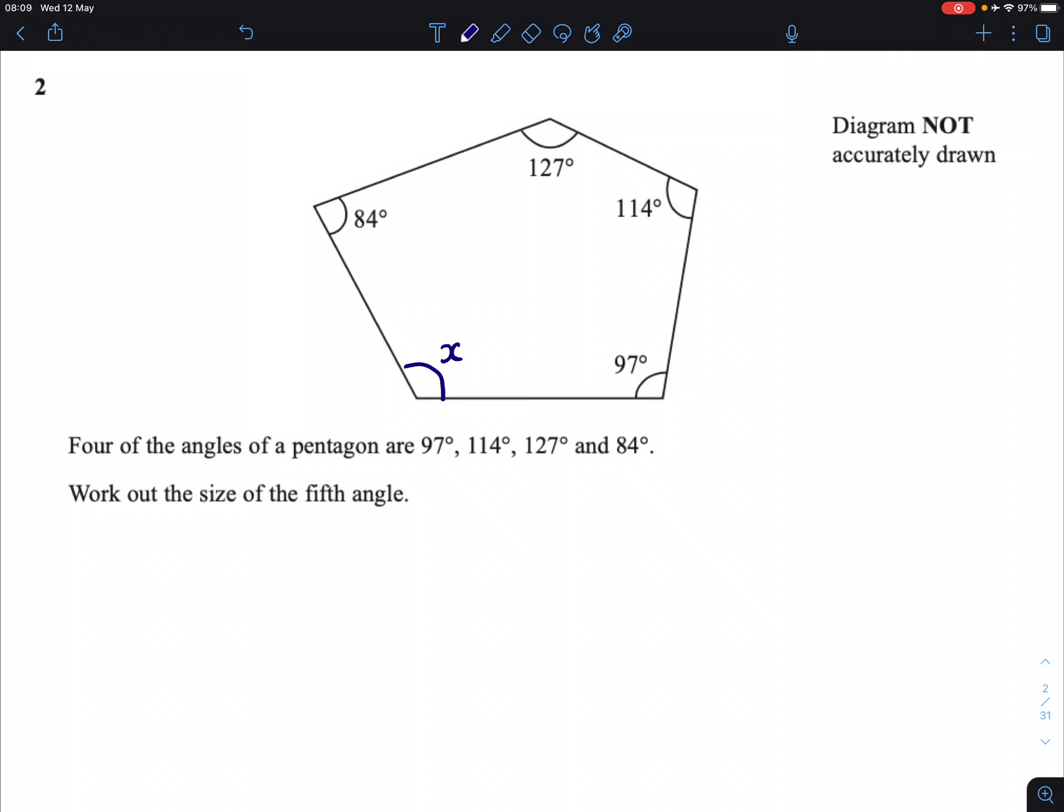So, in a pentagon, if you want to find what all of the interior angles add up to, then we take 5 and subtract 2 from it in order to find out the number of triangles. So I can show this visually like so. We'd have 1, 2, 3 triangles.